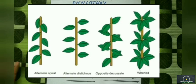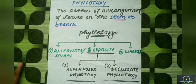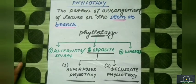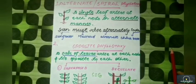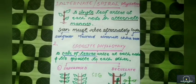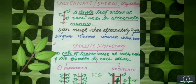Now let's learn each phyllotaxy one by one. First of all, alternate or spiral phyllotaxy. In alternate phyllotaxy, leaves arise from one node — only one leaf per node — but in an alternate manner.